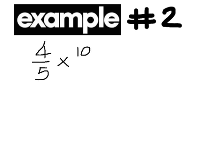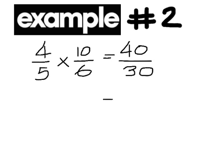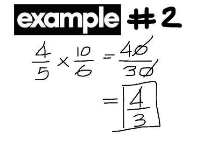Example number 2 is 4 over 5 times 10 over 6. Again, you can multiply straight across. 4 times 10 is 40 and 5 times 6 is 30. But you can't leave the answer like that because it can be reduced. What number goes into both of them? 10. So you can cancel zeros, and 4 over 3 is the final answer. Multiply from left to right and reduce the answer if possible.